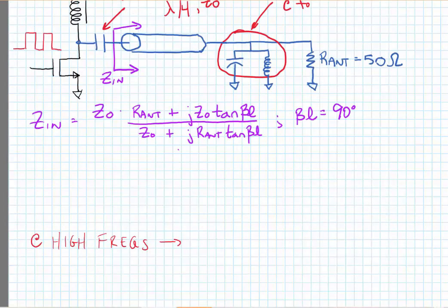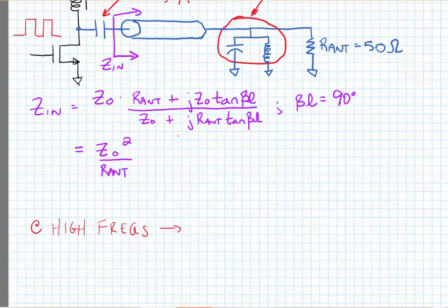If we solve this, we can simplify this because the tangent of 90 degrees is infinite. So our impedance looking into the transmission line is Z naught squared divided by our antenna, and nominally we might set this to be equal to the optimum termination resistance of the Class F power amplifier.